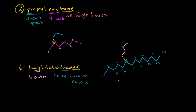Now, would you ever see 9-butyltetradecane written? The reason you won't is because there's a better way to number it. Instead of starting from the left and making the branch point the 9th carbon, you'd start from the right — making it the 6th carbon instead. You always want to start numbering from the direction that gives the lowest number for the first substituent group.